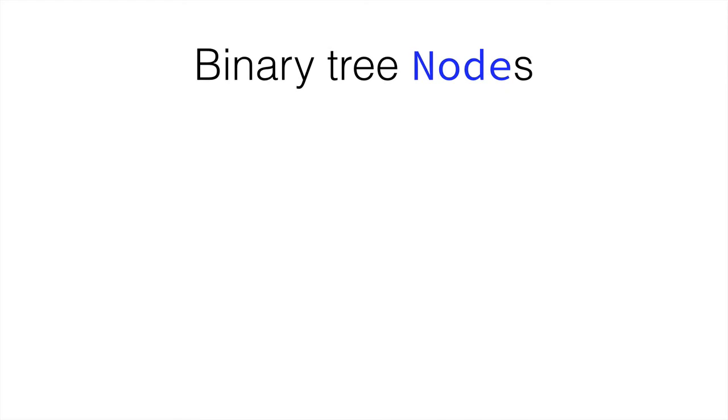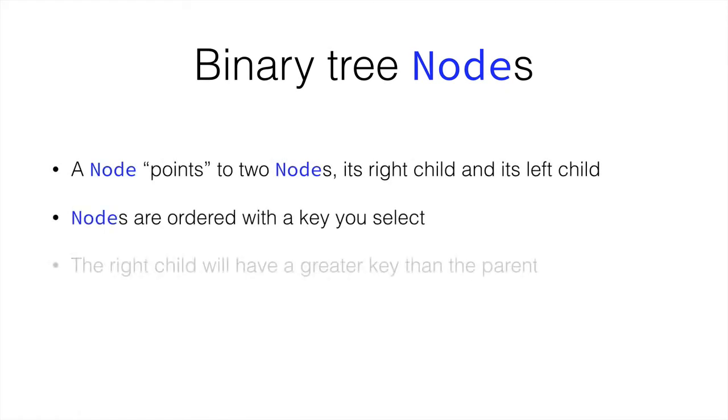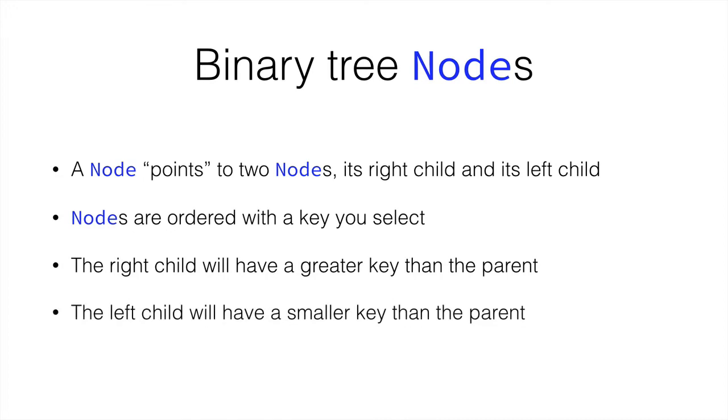So a node points to two nodes: right and left. Nodes are ordered with a key, and the right child has a greater key while the left child has a smaller key.